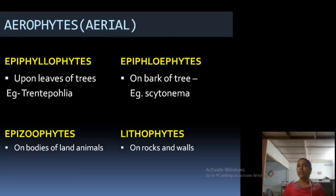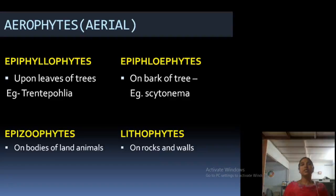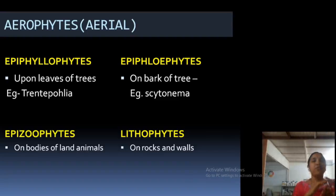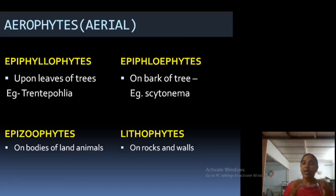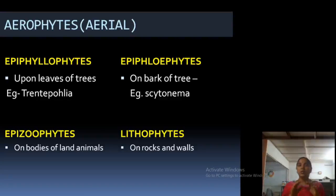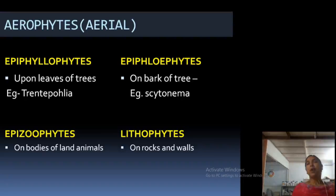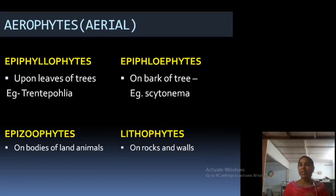Aerophytes are aerial algae — not in the air as such, but on the upper parts of plants. They are usually present on the leaves of trees, and you can call them epiphyllophytes — 'epi' means on, 'phyll' means leaf, so epiphyllophytes means upon leaves of trees. A very good example is Trentepohlia. Epiphytes can also be on the bark of trees. Epizooophytes are on the body of animals. Lithophytes are on rocks and walls.